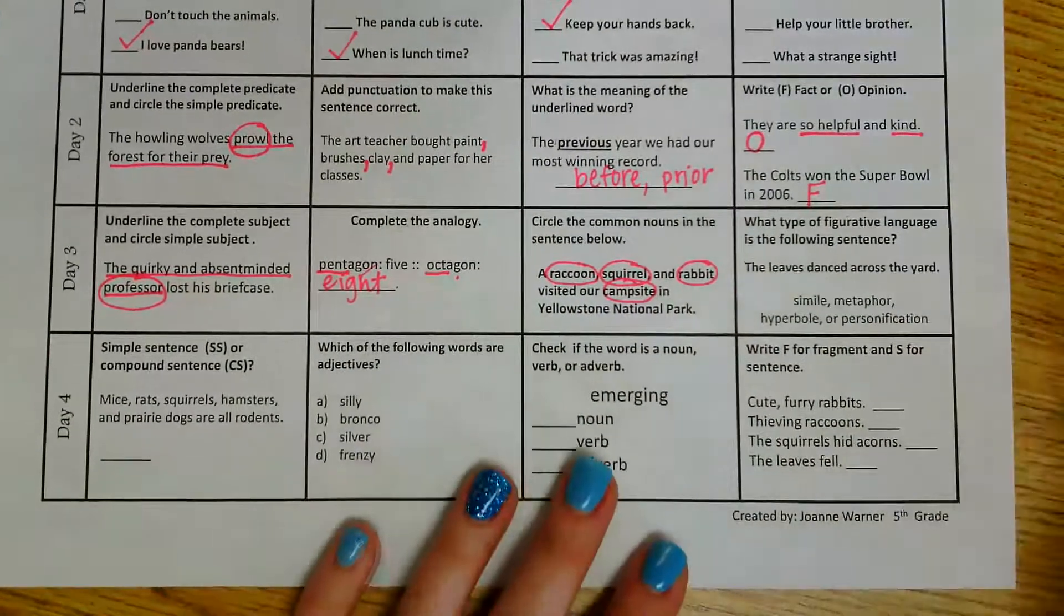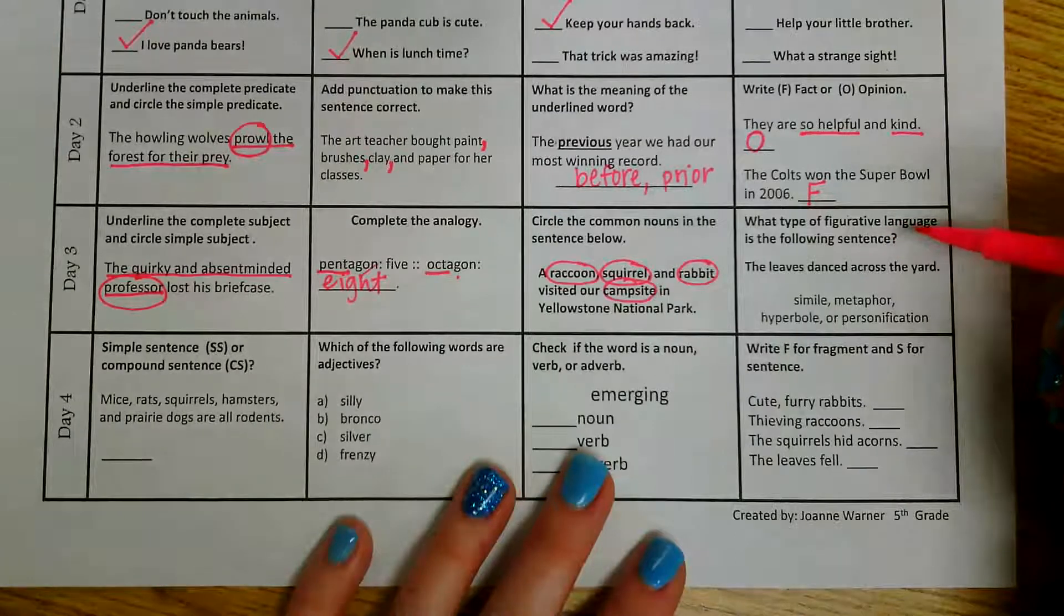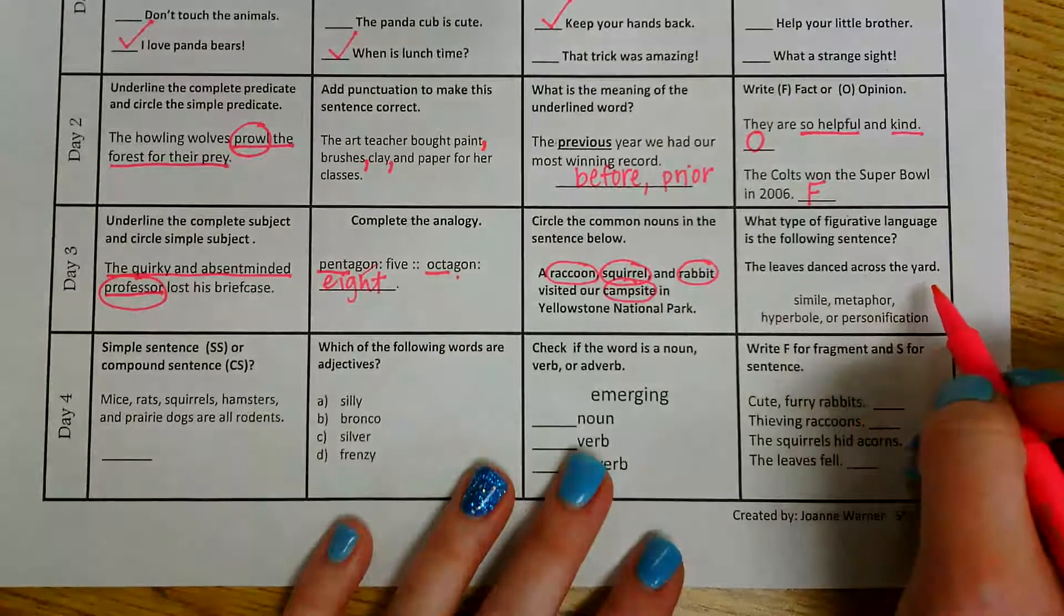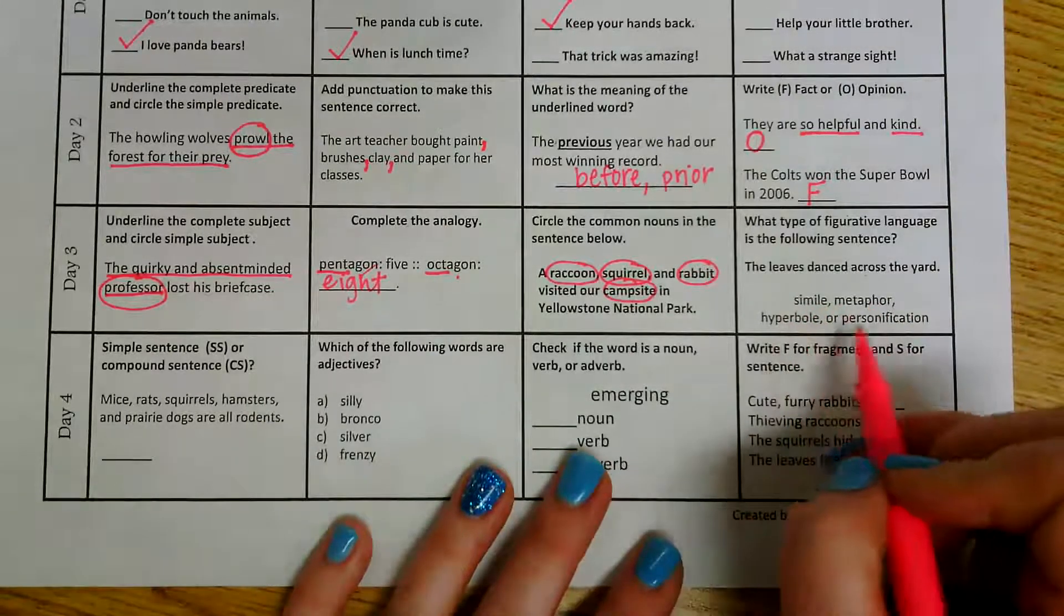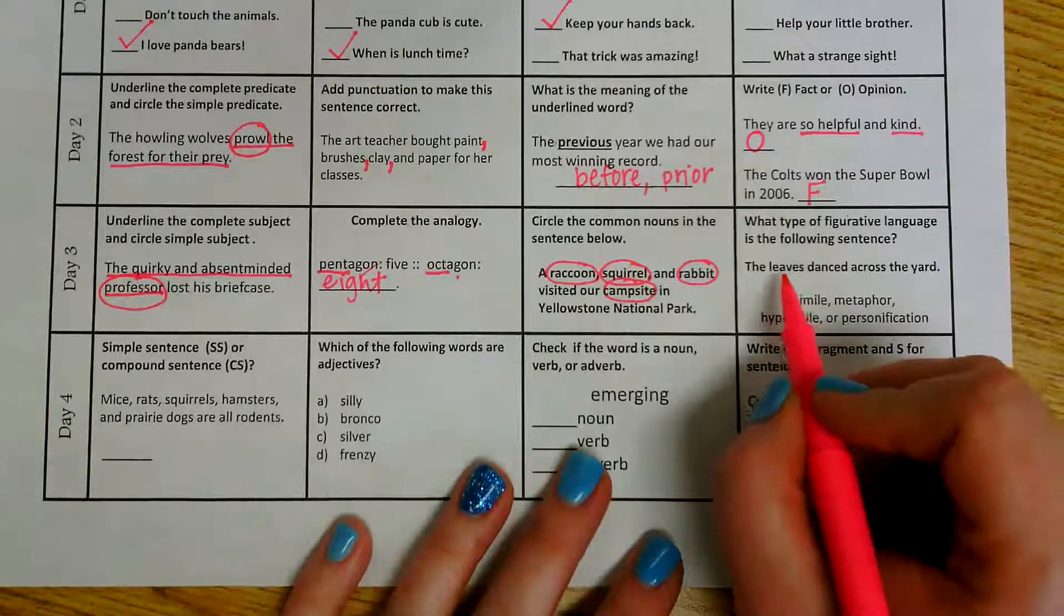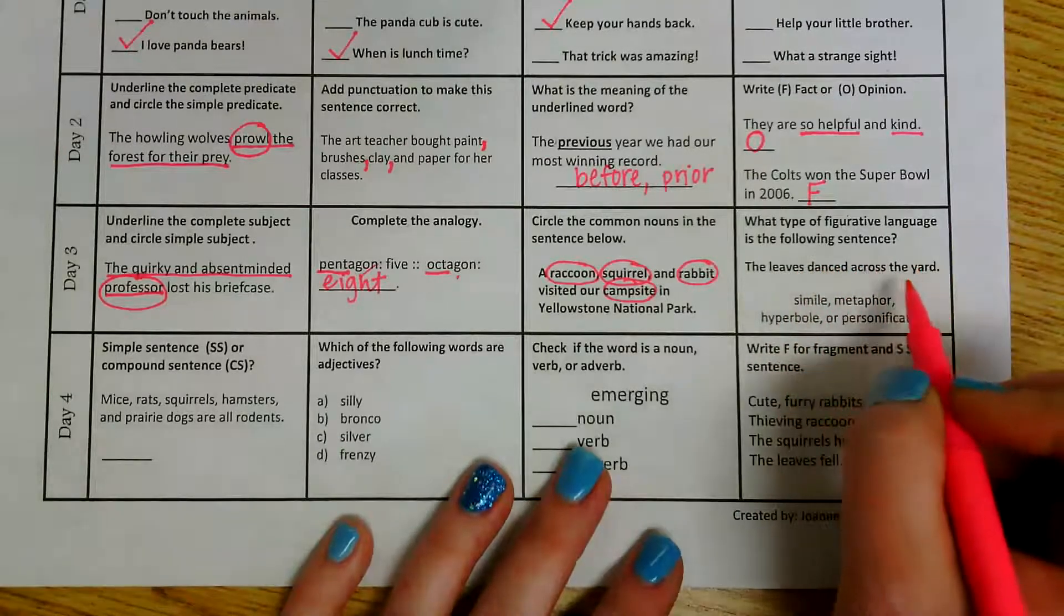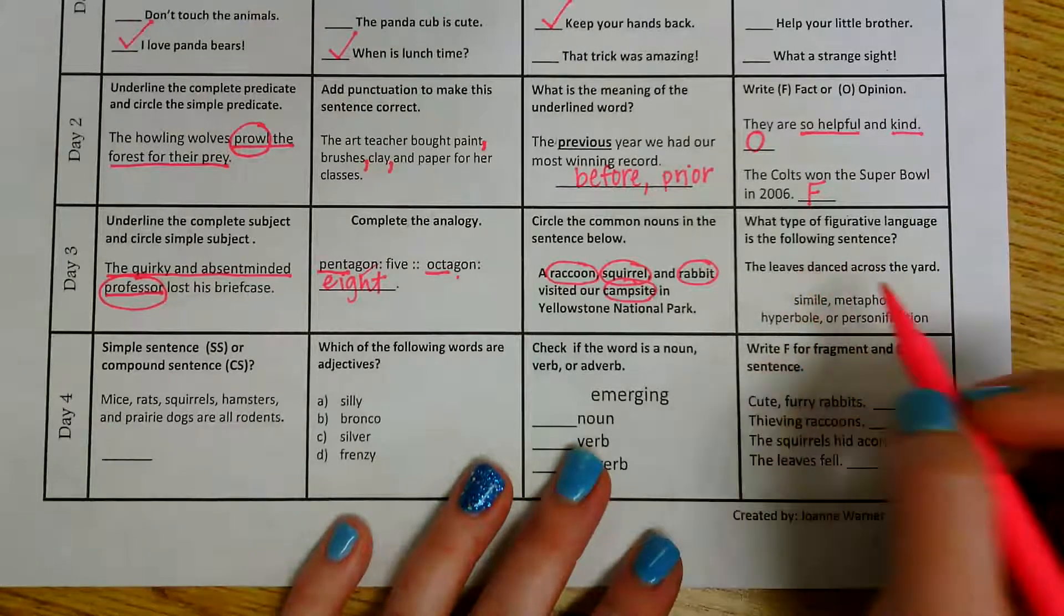In our last one for day three, what type of figurative language is the following sentence? It says the leaves danced across the yard. We have simile, metaphor, hyperbole, or personification. Well, I know that this sentence is telling me what the leaves are doing. It says the leaves danced across the yard. I know that leaves really can't dance, so I'm giving them a trait that would belong to a human.